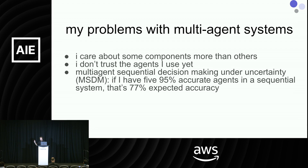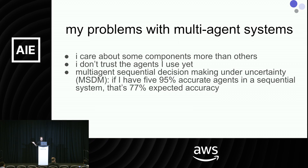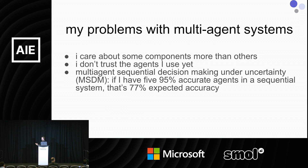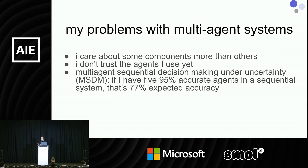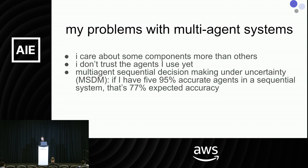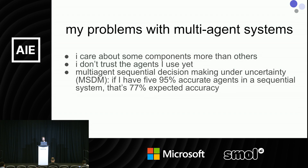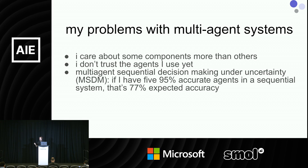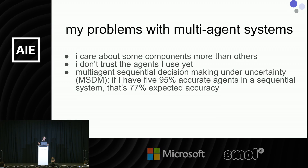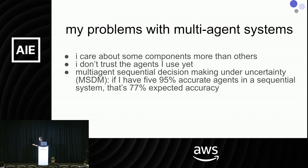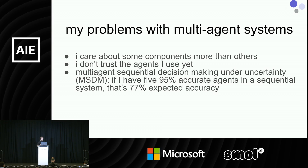95% accuracy for a single agent is a tall order at this point. I have systems with guard rails and humans in the loop that can bring agents to a point where people are willing to use them. However, five 95%-accurate agents chained together sequentially gives 77% expected accuracy — that's not that many agents in a row. If you think about a workflow of five steps, if each is 95% accurate, already quite a hard thing to ask especially with an LLM involved, now we're at 77% of the time getting to the end of that workflow the way I want. That is probably my main problem: decision-making under uncertainty throughout the process of building these systems.